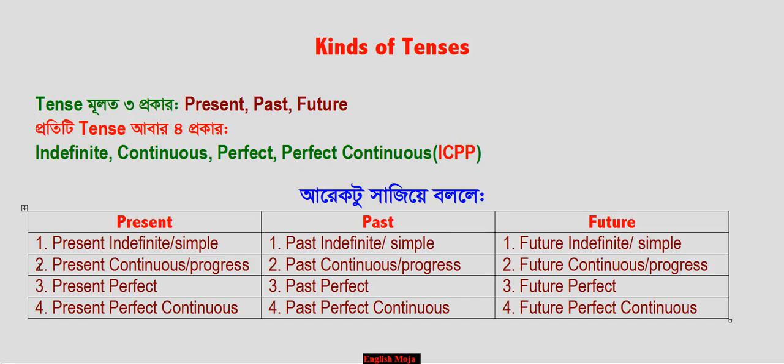Now, Number 1 is Present Indefinite — also called Present Simple. Number 2 is Present Continuous — also called Present Progressive. Number 3 is Present Perfect. Number 4 is Present Perfect Continuous.